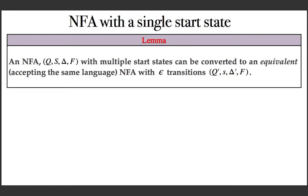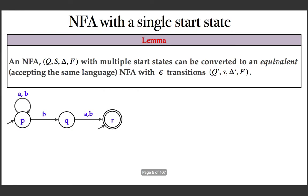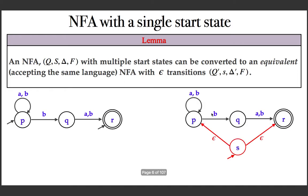Equivalent in the sense of accepting the same language. Consider an example: given an NFA where epsilon transitions are not used, there are two start states. The lemma says that this can be transformed into an NFA with a single start state. What I did is add a new state and make it the unique initial state in the required NFA.